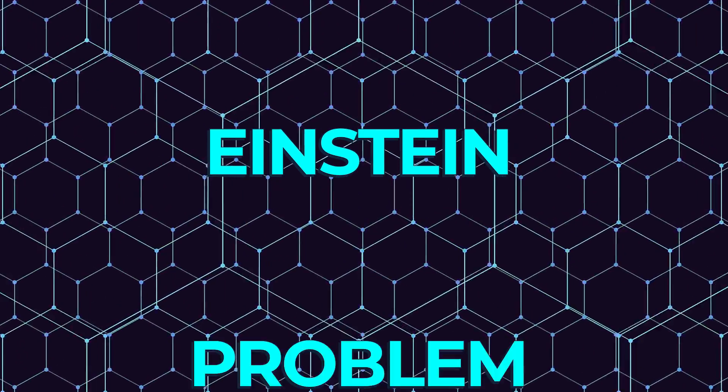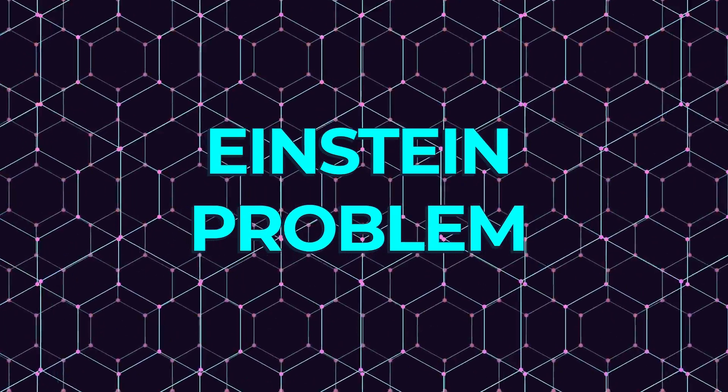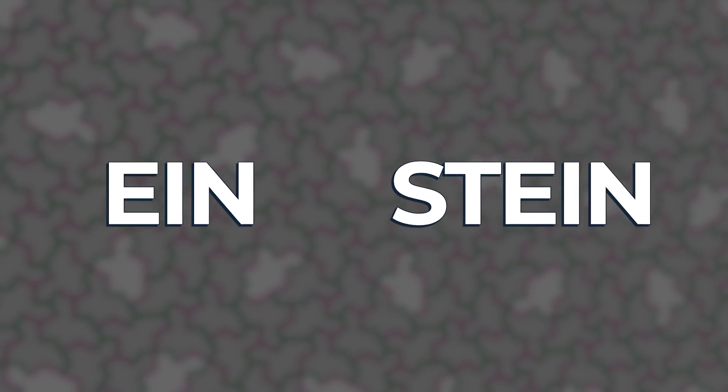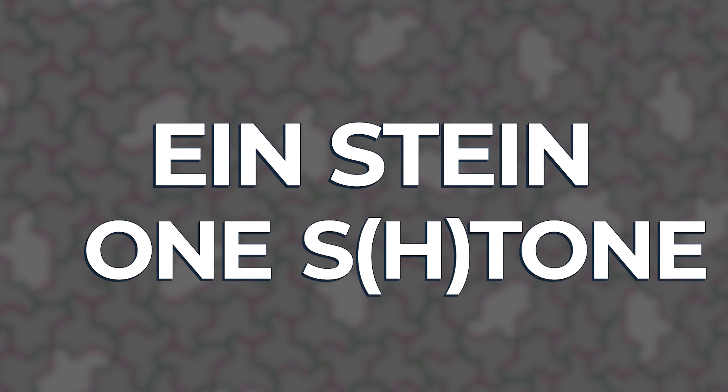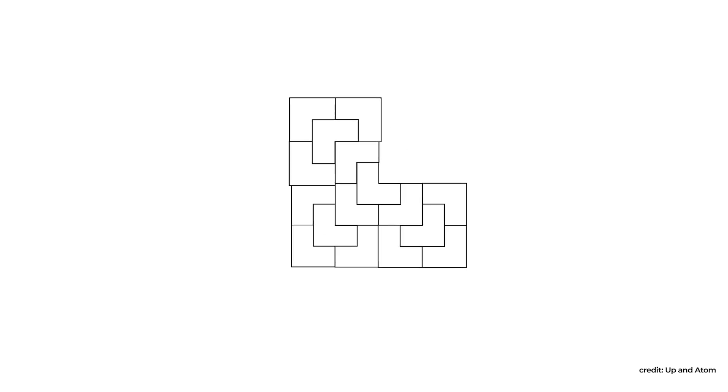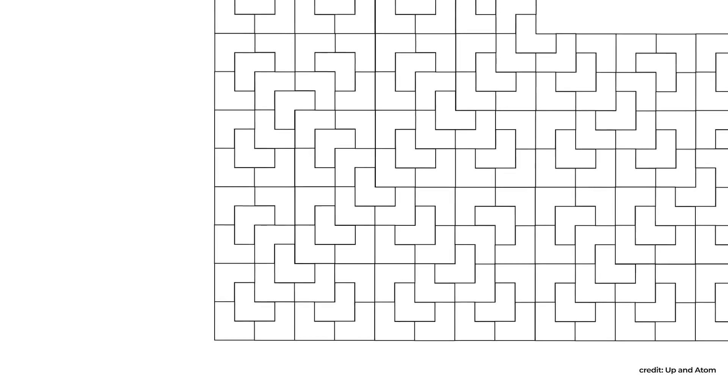This problem is known as the Einstein problem: finding a single shape that by itself tiles infinitely across all of space and never repeats its pattern. Such a shape is called an Einstein because it's a wordplay on 'ein stein,' German for 'one stone,' or the more technical name for it is an aperiodic monotile. I'm going to walk us through each concept needed to understand it, why it matters, and how it can be used to produce beautiful patterns that never repeat even to infinity.